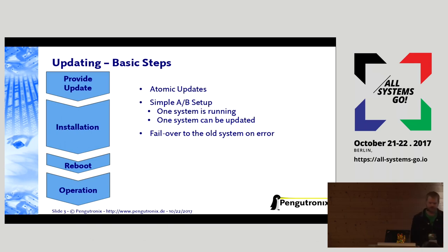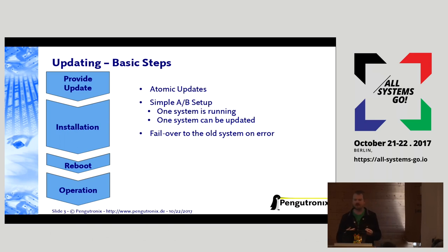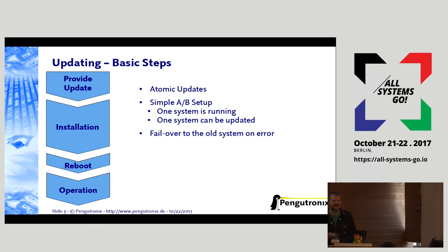Let's talk a bit about updating first. I'd like to focus on the standard simple A-B setup, where you have one running system and a separate partition where you can write the new version of your operating system while your current system is still running. When that process is done, you say OK, now I'm finished and I can start the new version. And if that fails — maybe there's a bug, or the OS failed in some way during flashing, or some outside circumstance makes startup fail — you go back to the previous version that worked.